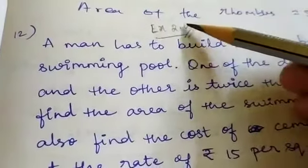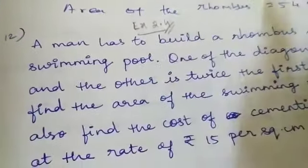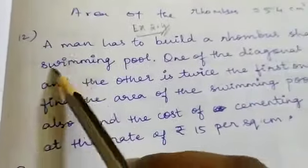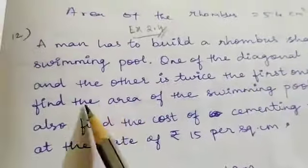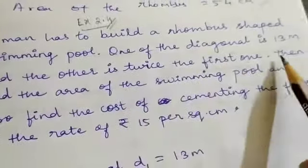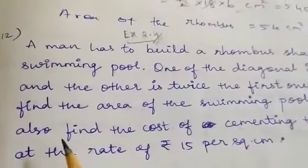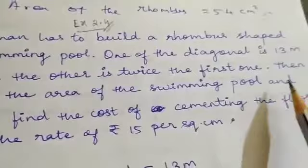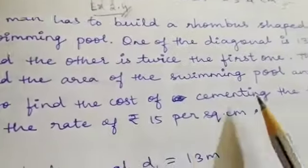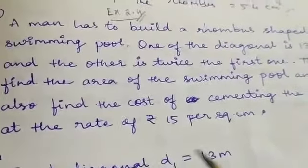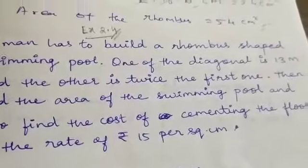So students, in exercise 2.4 let us continue with our 12th question. A man has to build a rhombus shaped swimming pool. One of the diagonals is 13 meters and the other is twice the first one. Then find the area of the swimming pool and also find the cost of cementing the floor at the rate of rupees 15 per square meter.